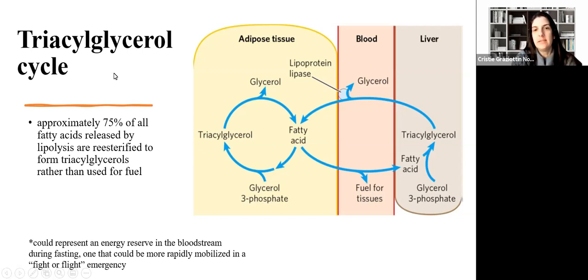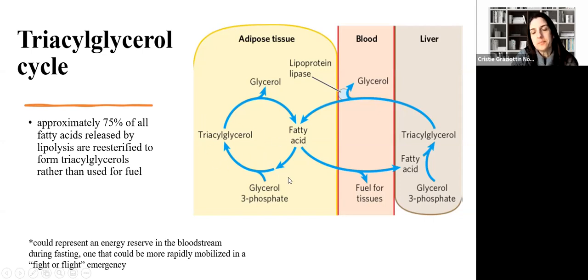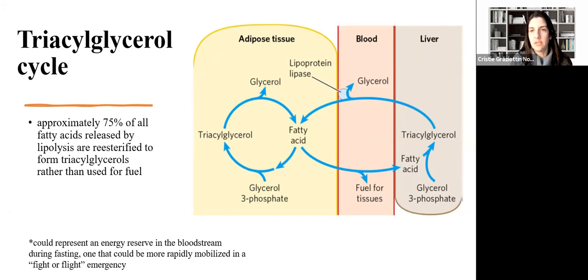In a situation where we need energy and the triacylglycerol reserve is mobilized in adipose tissue, we have the release of fatty acids. These fatty acids travel through the body to tissues that need energy. However, most go to the liver, where they are re-esterified to triacylglycerol. That triacylglycerol is released into the blood, and then through the action of lipoprotein lipase, fatty acids are released and in the adipose tissue are re-esterified to triacylglycerol. This might seem like a useless cycle, but it could represent an energy reserve in the bloodstream during fasting, enabling fast mobilization of energy sources when needed.